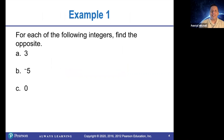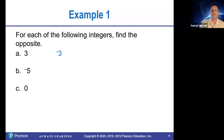Very easy example to start with. For each of the following integers, find the opposite. So of course, the opposite of 3 is negative 3. The opposite of negative 5 is 5. And 0 is its own opposite.